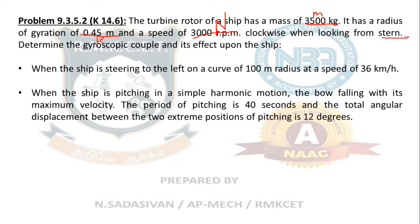We need to determine the gyroscopic couple and its effect upon the ship for two cases. Case one: when the ship is steering to the left on a curve of 100 meter radius at a speed of 36 km per hour.